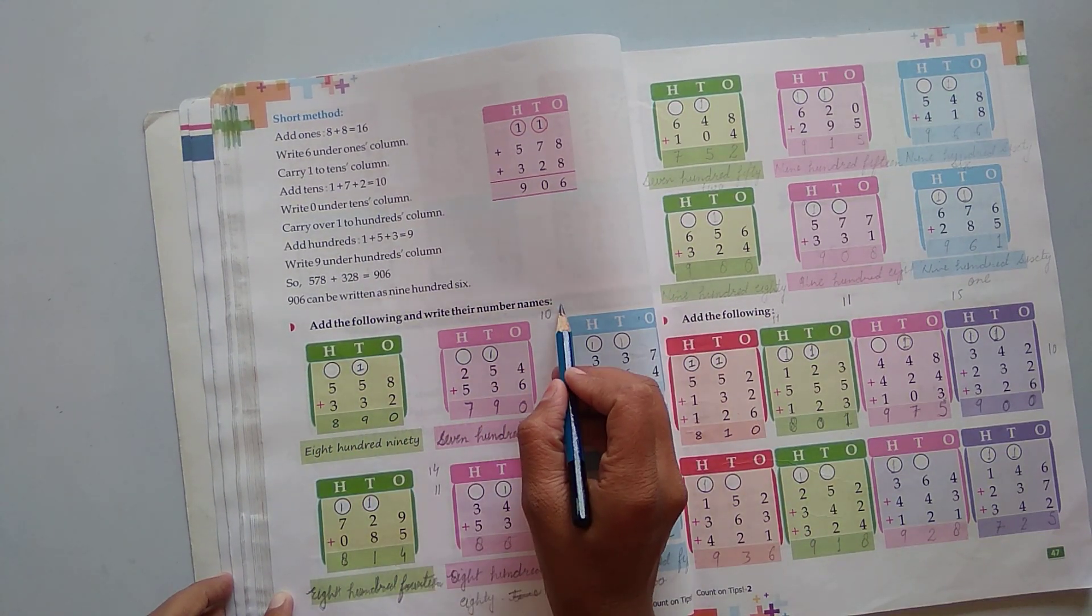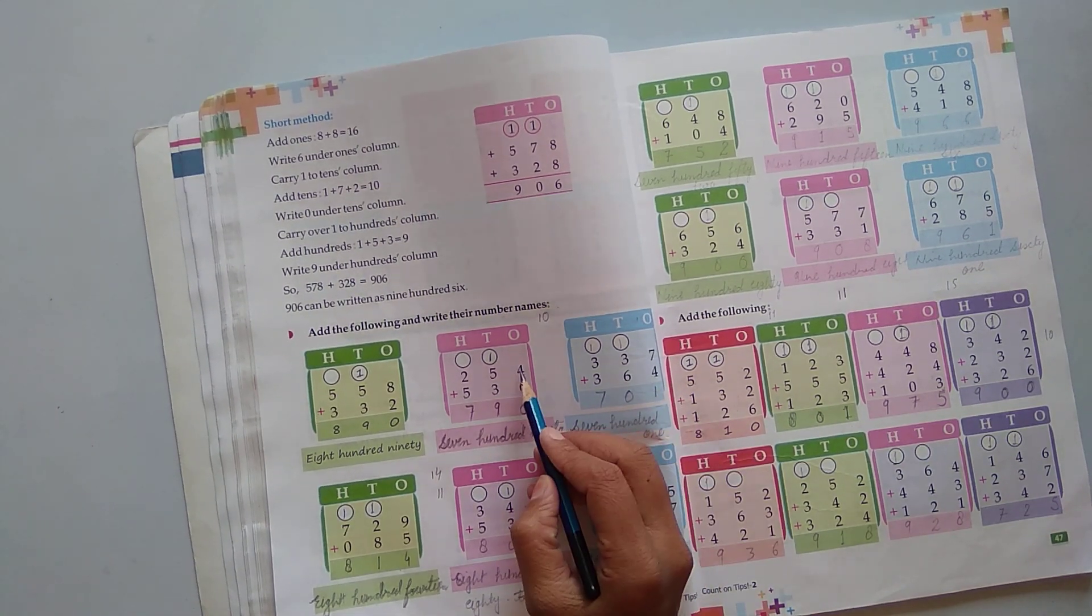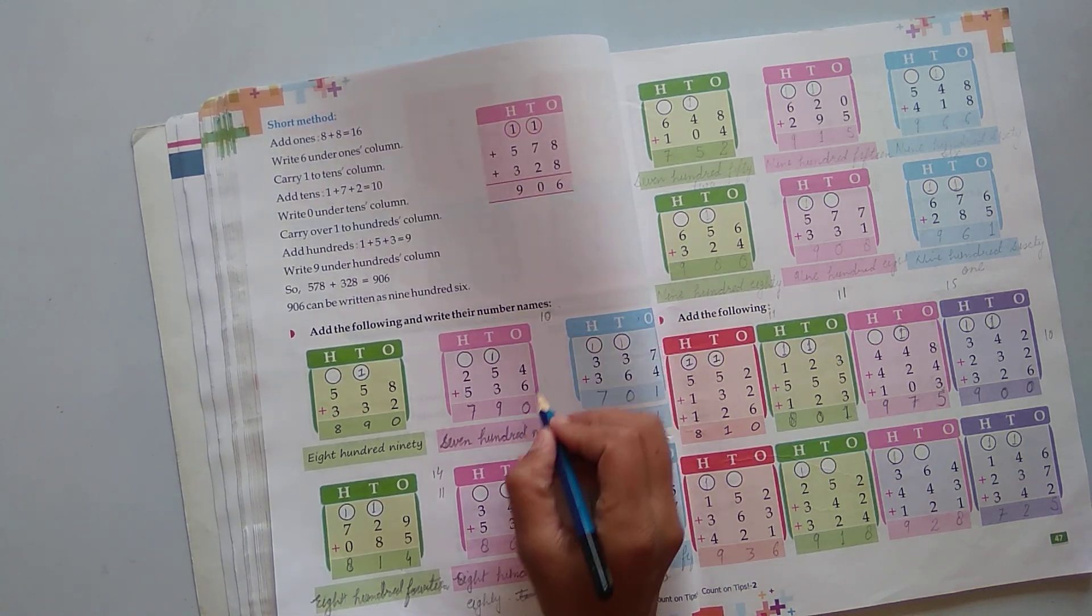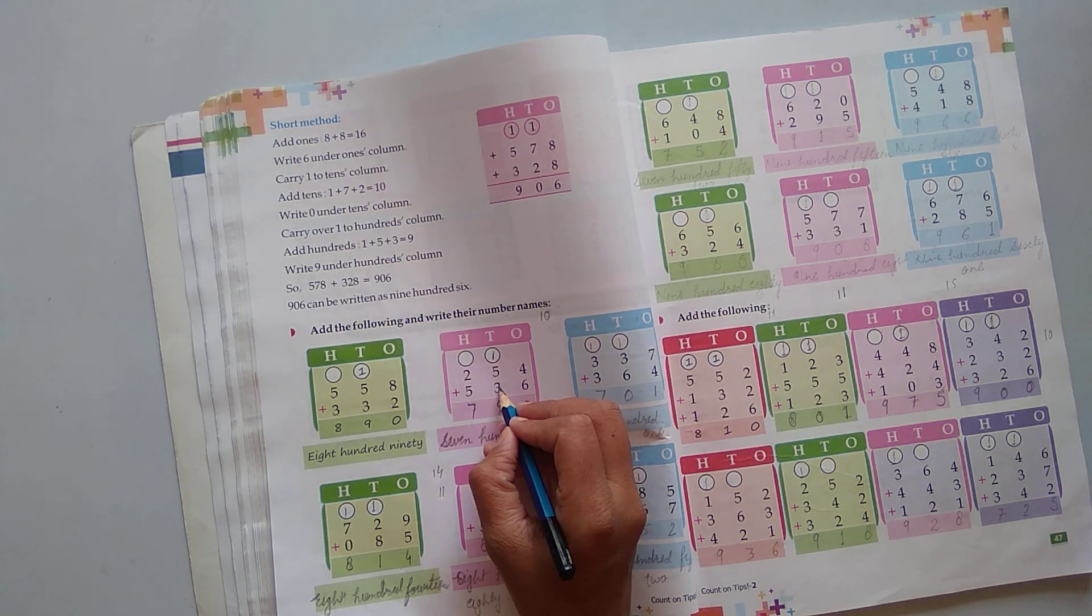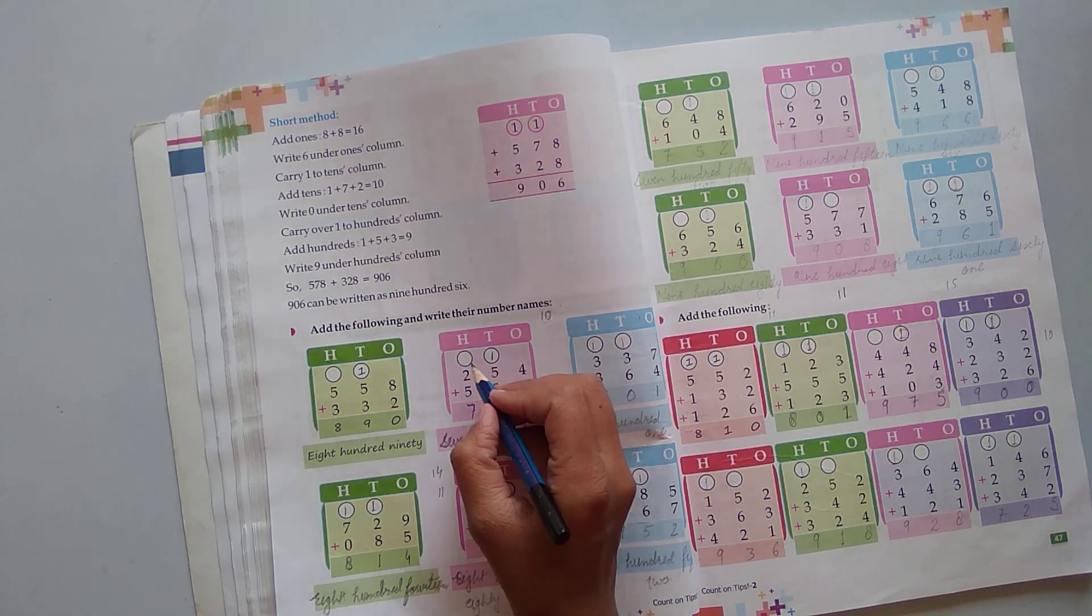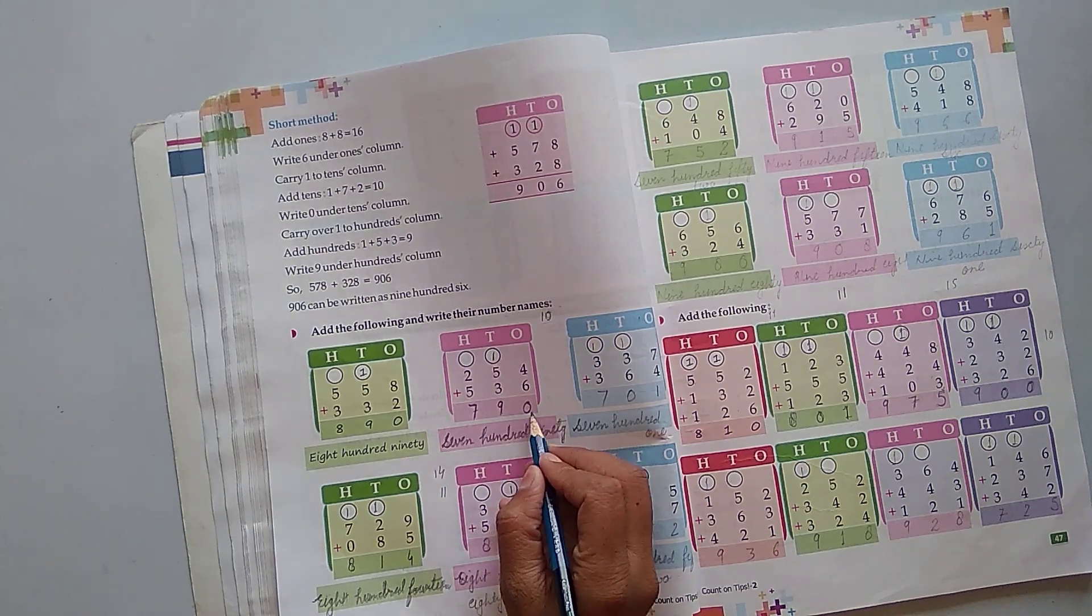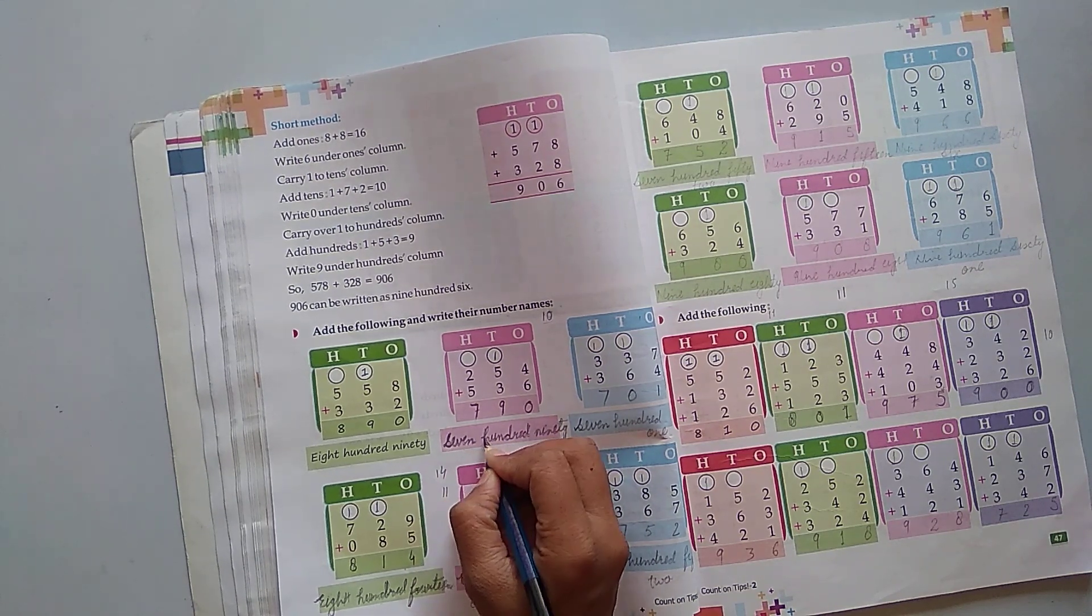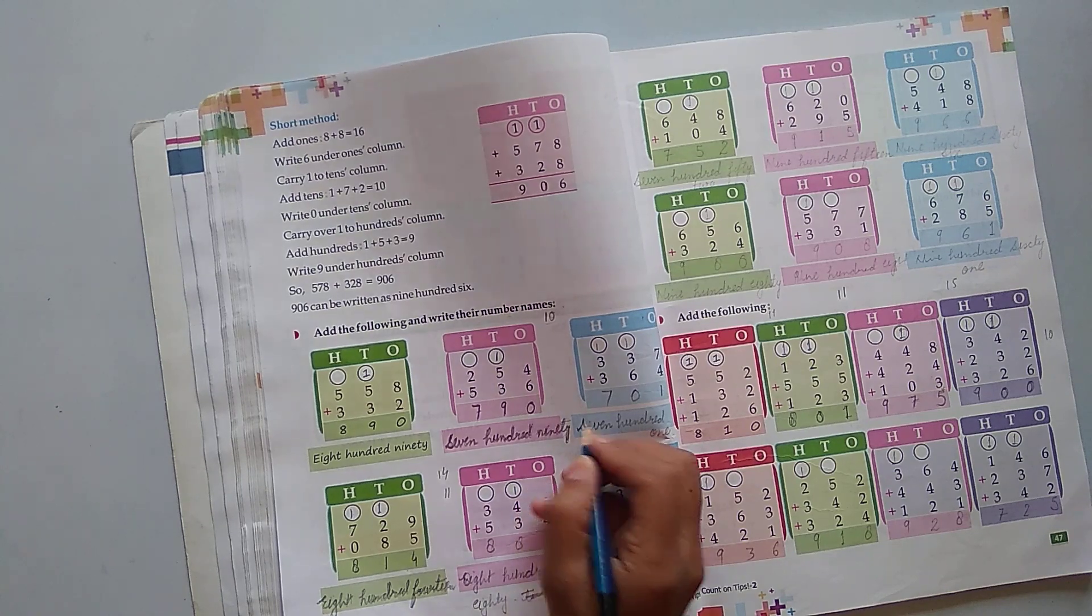Add the following and write the number names. First, 254 plus 536. Start from the right side. 4 and 6, it becomes 10. Write 0 here and give 1 carry here. Now add 5 and 3, it becomes 8, and also add carry 1 in it, it becomes 9. Write here 9. Now add 2 and 5, it becomes 7. Write here 7. Hence, the answer is 790. This is 790.